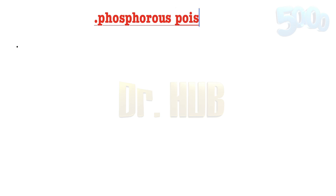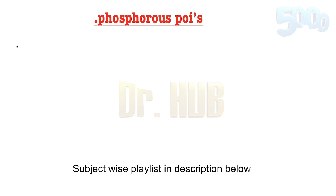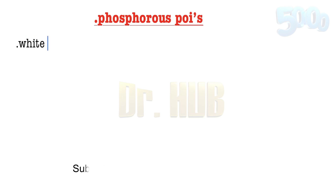Under phosphorus poisoning, we need to know the chemistry. There are two forms of phosphorus — one is white and the other one is red. White phosphorus is the toxic form.